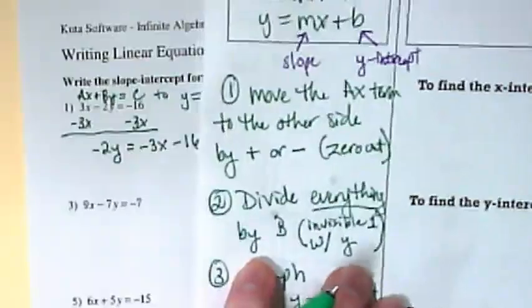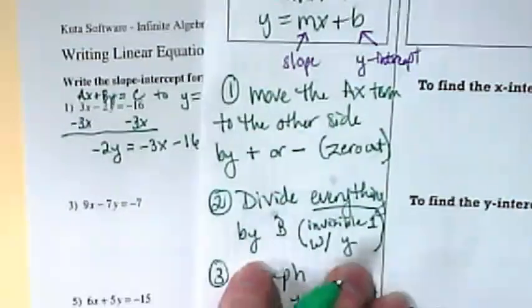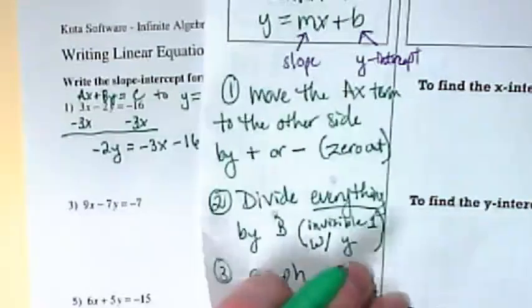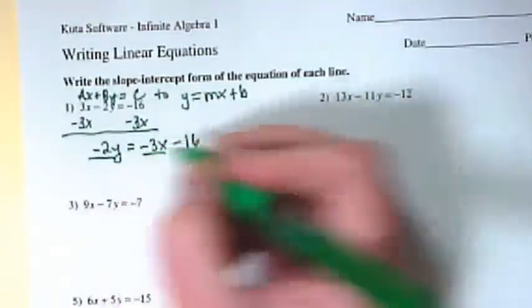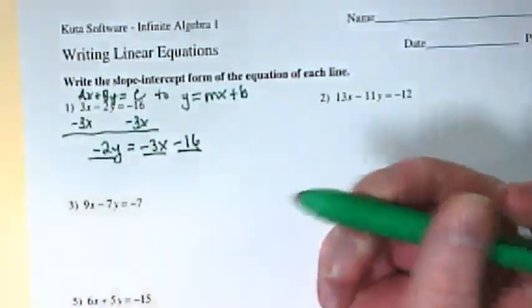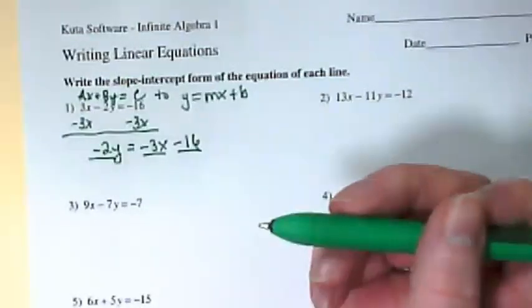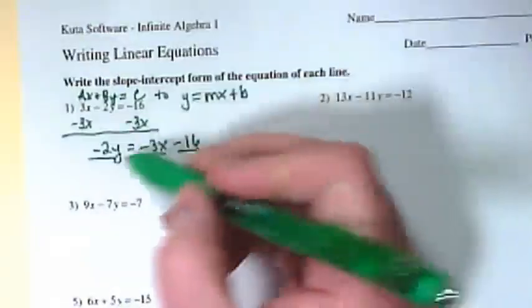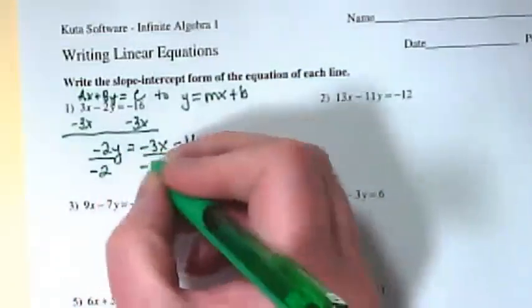Our second step says divide everything by b. We want that invisible one to solve for the y. What's in place of the b in this equation? What's with the y? What kind of 2? Negative 2. So we're going to divide everything by negative 2.